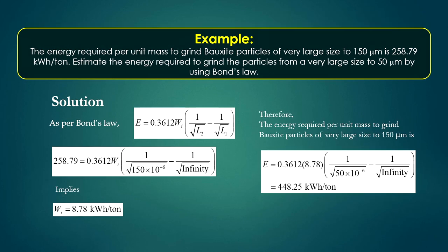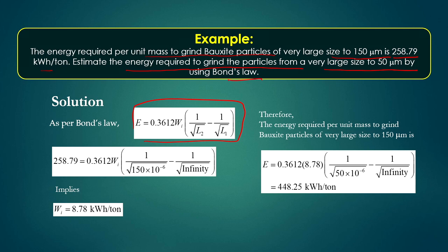Another example based on Bond's law: the energy required per unit mass to grind bauxite particles from a very large size to 150 micrometers is 258.78 kWh/ton. Using Bond's equation E = 0.3612·Wi·(1/√L2 − 1/√L1) with L1 = infinity and L2 = 150 × 10^-6 m, we find the work index Wi = 8.78 kWh/ton, consistent with the tabulated value for bauxite.